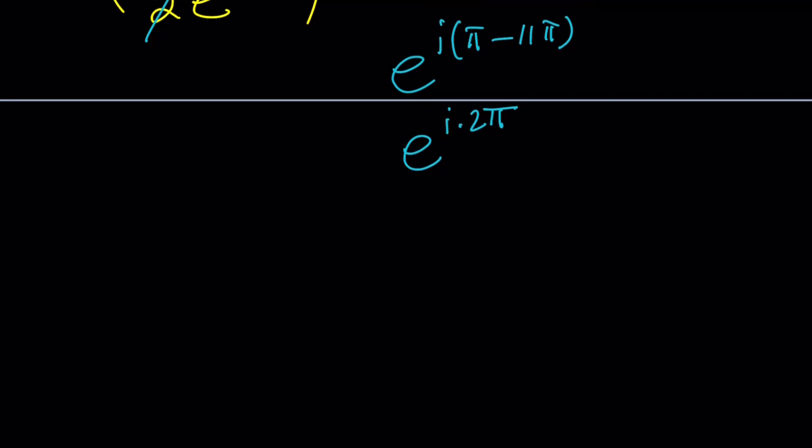So what does this tell you? This tells you that when the angle is 2 pi radians or 0 radians or any multiple of 2 pi, you're basically on the positive real axis. And this is just going to be 1. So this is 1. And that's the answer. Make sense?